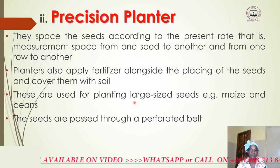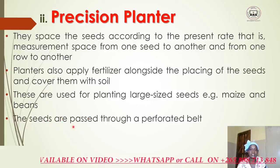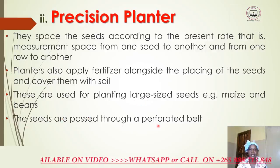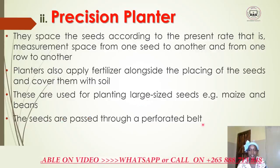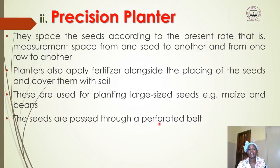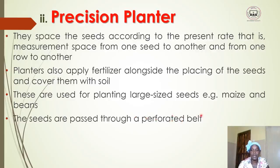The seeds are passed through a perforated belt — a belt with pores through which the seeds pass. The spacing of the pores on the perforated belt varies depending on the type of plant you are going to grow.